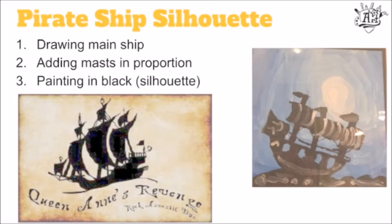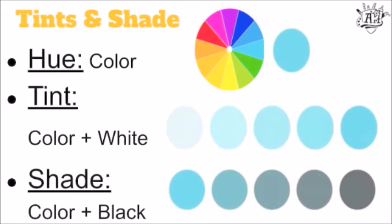For the night sky, we're going to use our knowledge of tints and shades. Last week we learned that hue is the color of a color from the color wheel, a tint is a color plus white, and a shade is a color plus black.